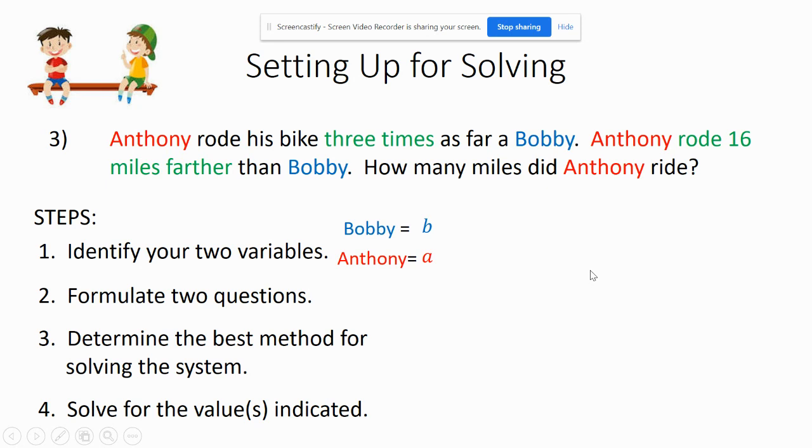So let's formulate two questions from this. We have Anthony rode his bike three times as far as Bobby. So I might go to my scale here, and I know this here.